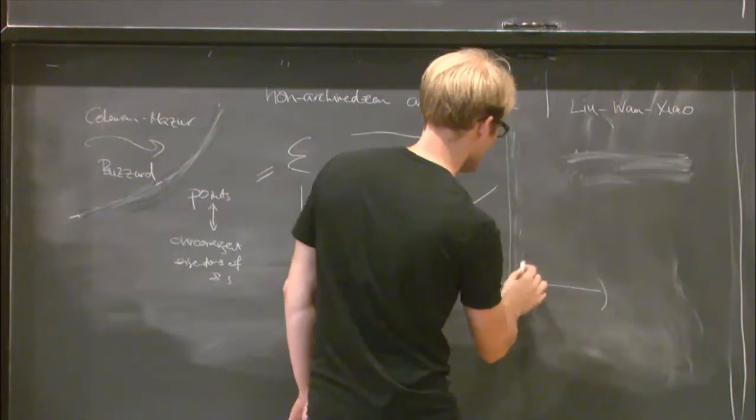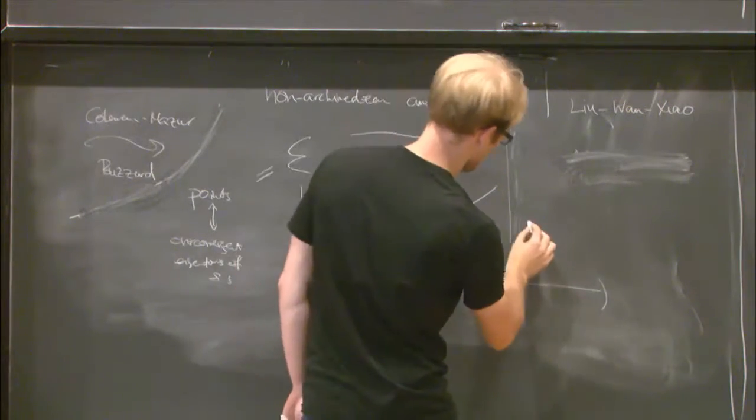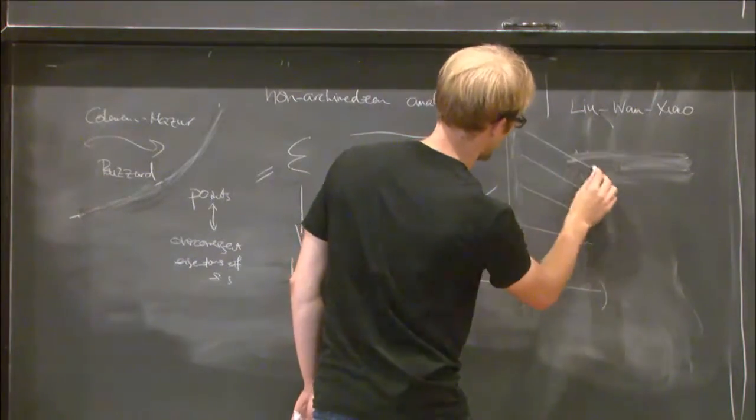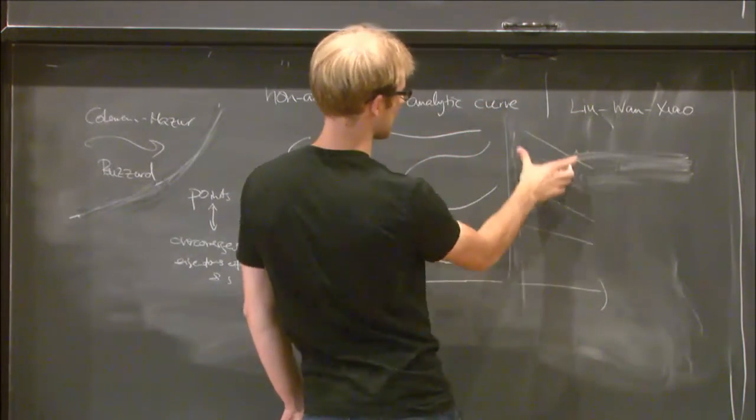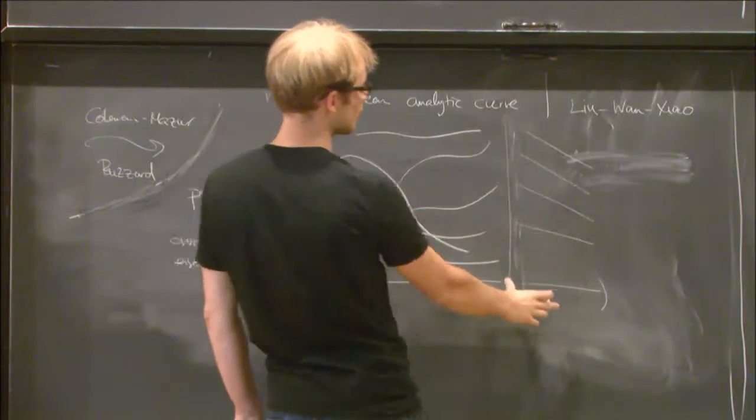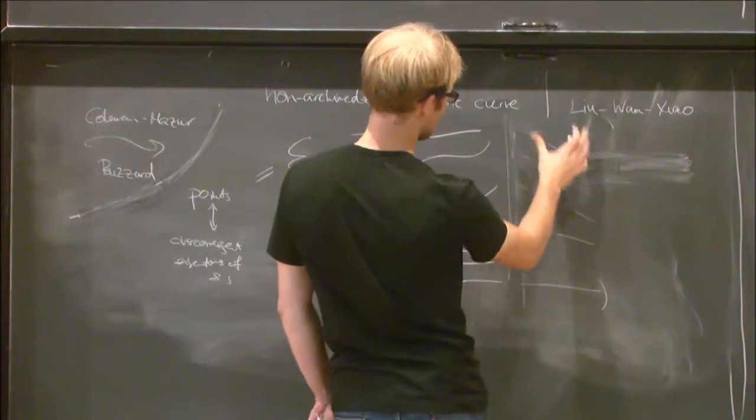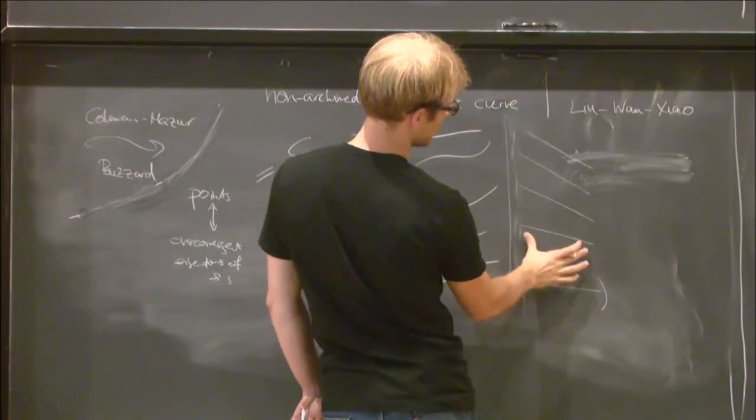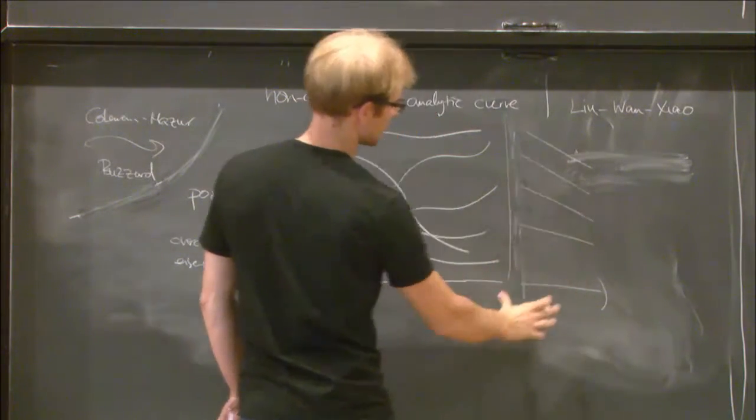many components start looking like just copies of, just start to look like an infinite number of copies, rather the whole eigencurve starts looking like an infinite number of copies of this boundary of the unit disk, this kind of annulus.